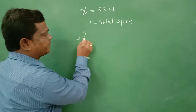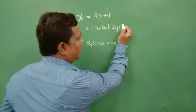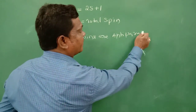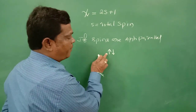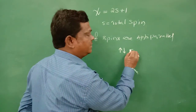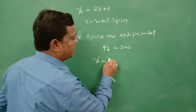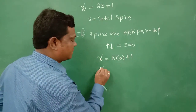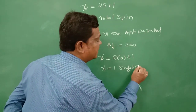If electron spins are anti-parallel — that is, the upward spin transition is cancelled by the downward electron spin transition — then S is equal to 0. So the spin multiplicity chi equals 2 times 0 plus 1, which gives chi equal to 1. This means it is a singlet excited state.